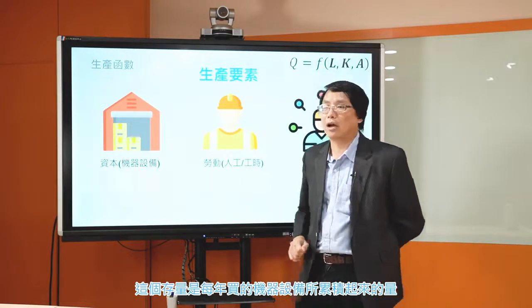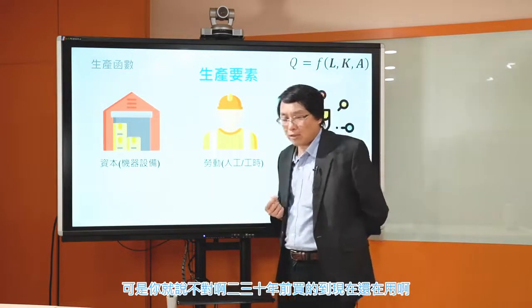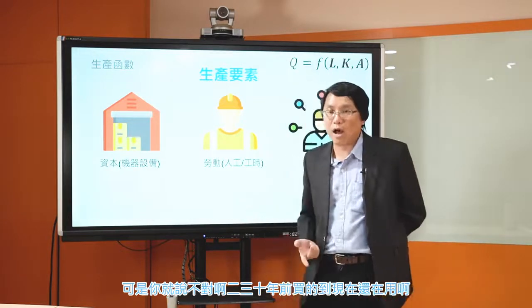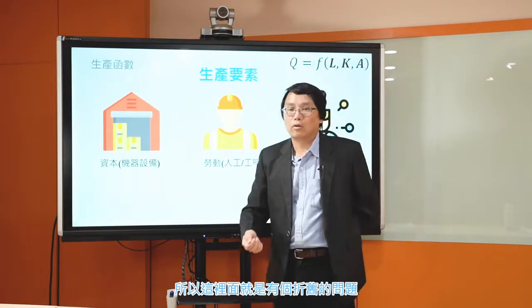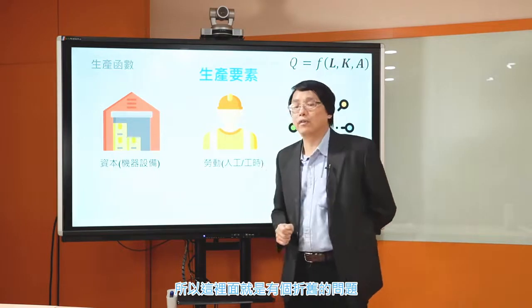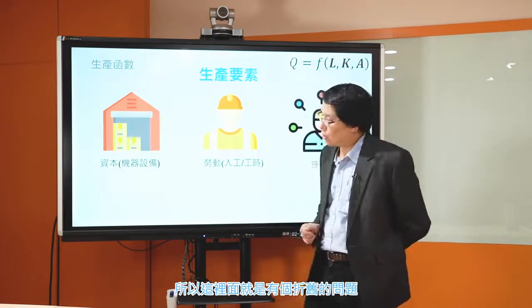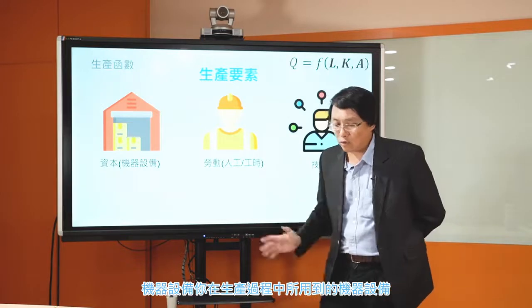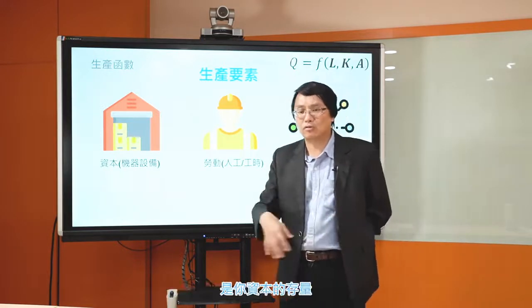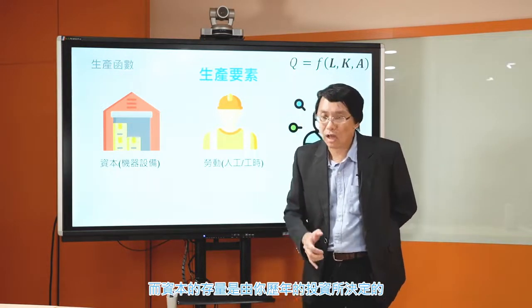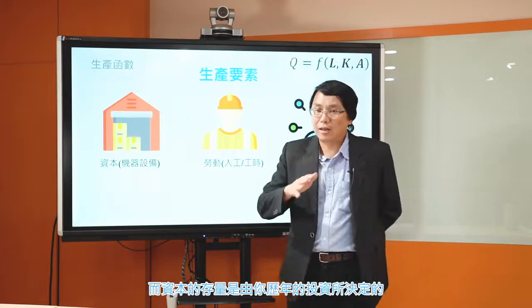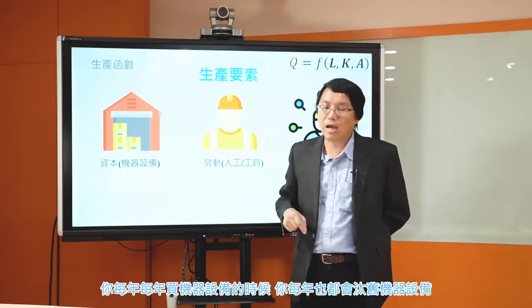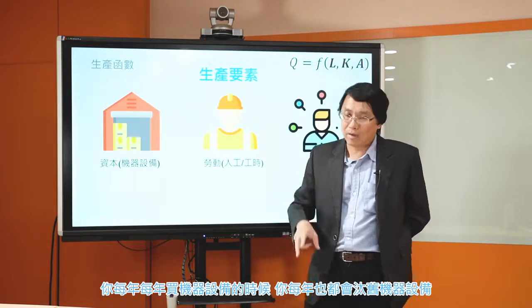所以你現在所用到的所有機器設備資源，包括今年買的、去年買的、前年買的或更早以前買的所有機器設備。這個機器設備是你現在在工廠或公司裡面所有資本的存量，這個存量是來自於每年每年買的機器設備所累積起來的量。當然機器設備用一用會有折舊的問題，資本的存量是由你歷年的投資所決定的。